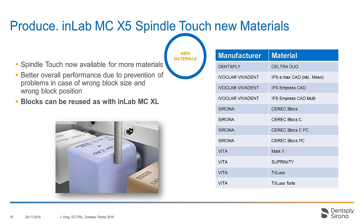We improved the spindle touch for the remaining materials, so almost all glass ceramic blocks will be touched before the milling or grinding process starts. You can see the list of which materials will be touched on the right side. This makes it more secure that the user is not using the wrong block size for a restoration, avoiding destroying the instrument or dislodging the block from the holder.